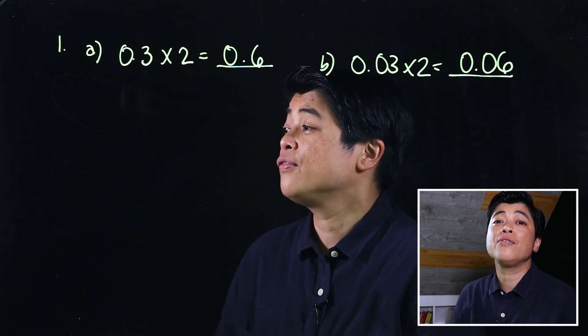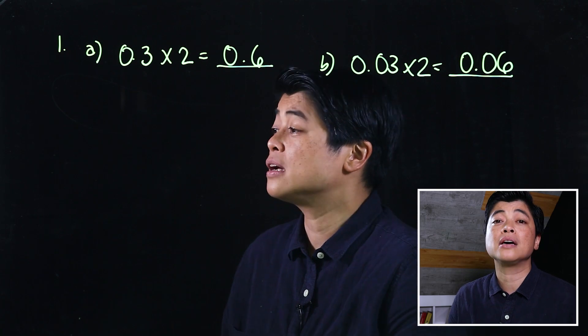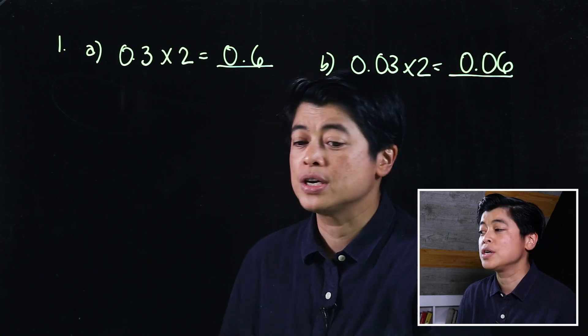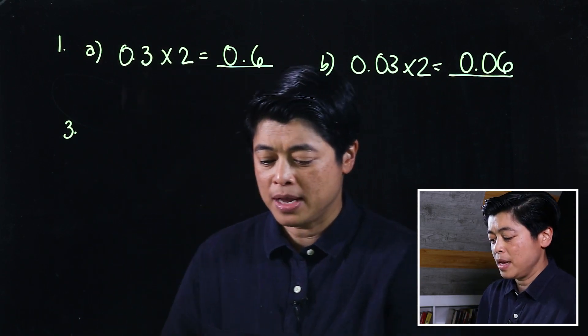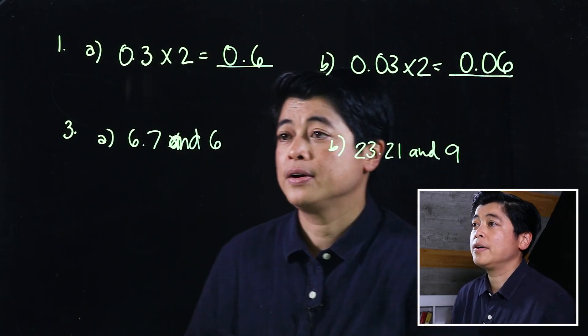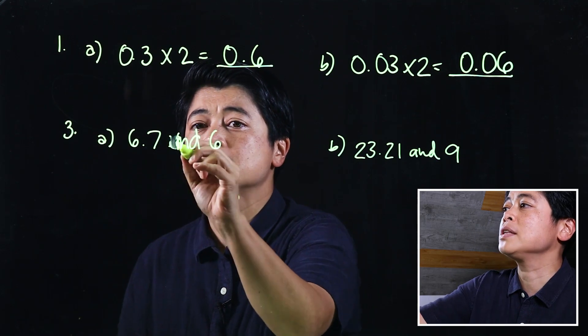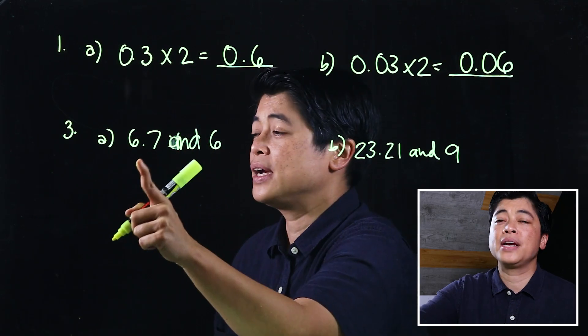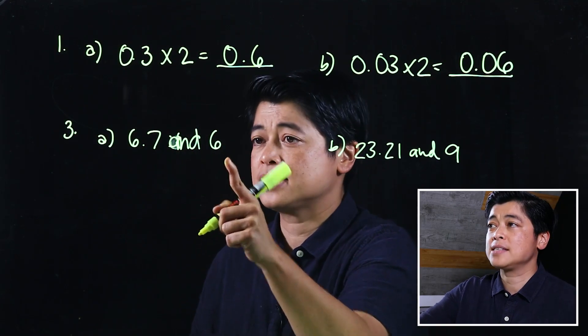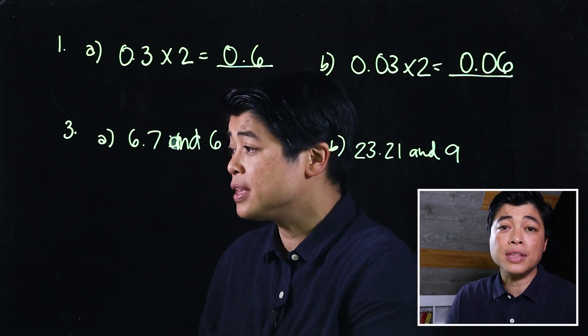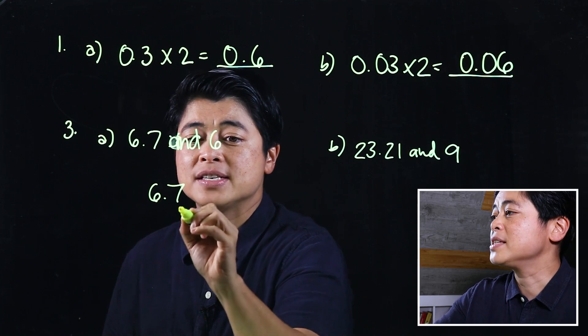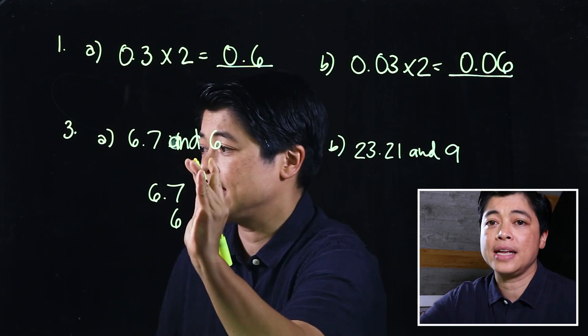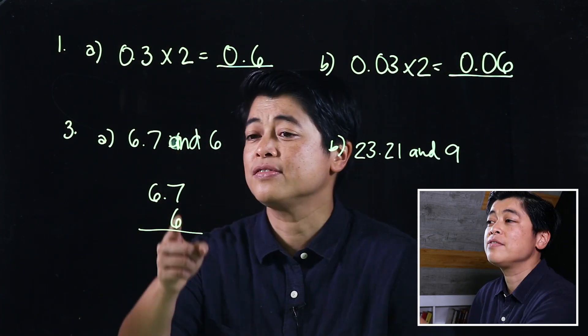But if we can't, then that means we need the computational approach. To demonstrate, we take problem 3. The instruction says multiply 6.7 and 6. So when we do this, we put the 6.7 on top, we put the 6 aligned on the right, and then we multiply as if the decimal place isn't there.